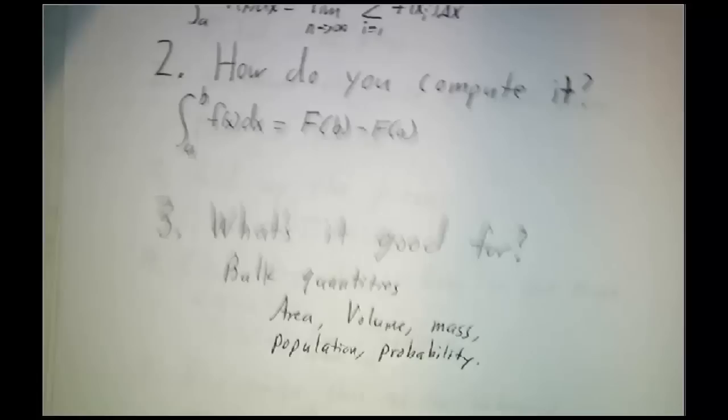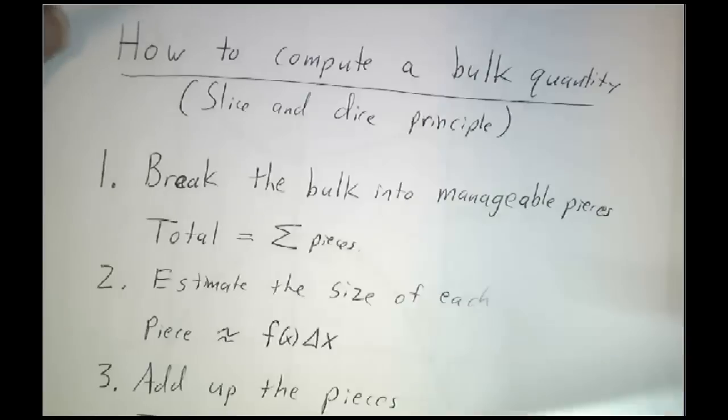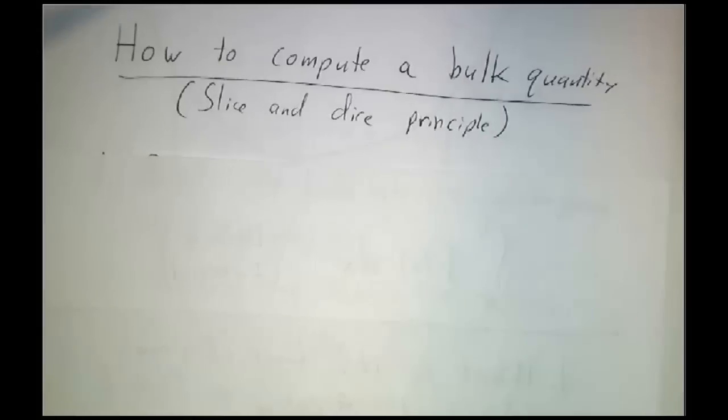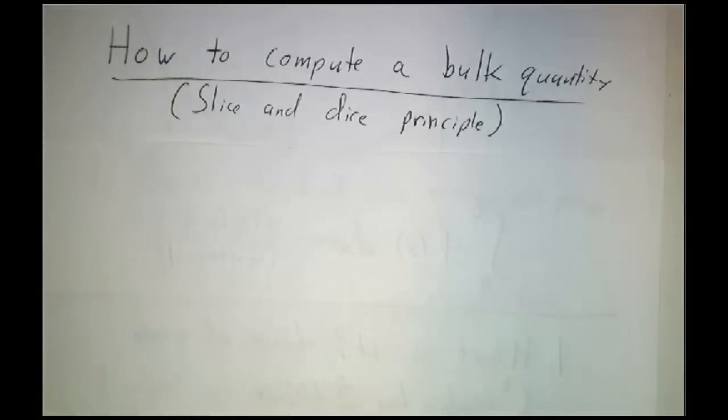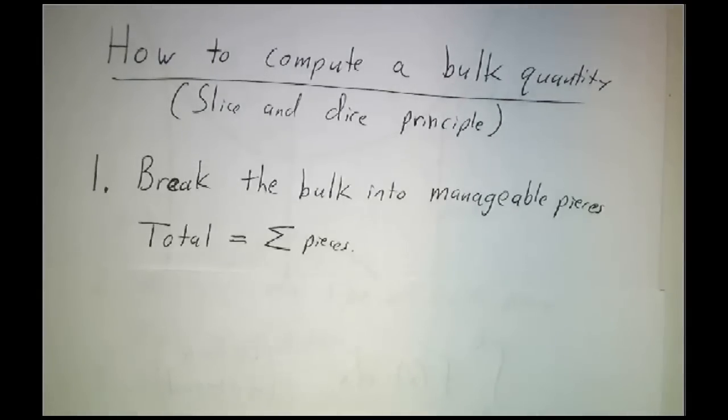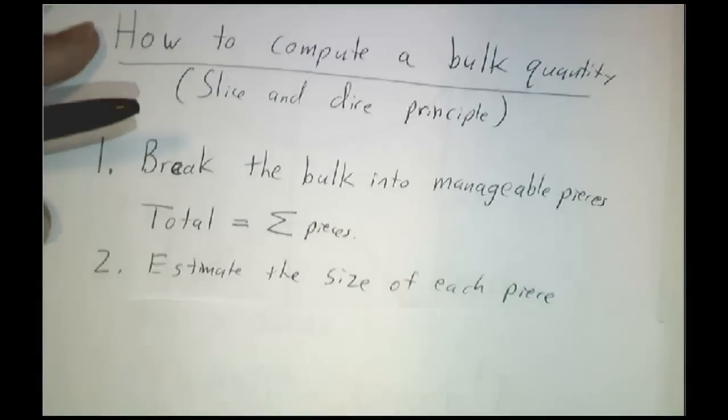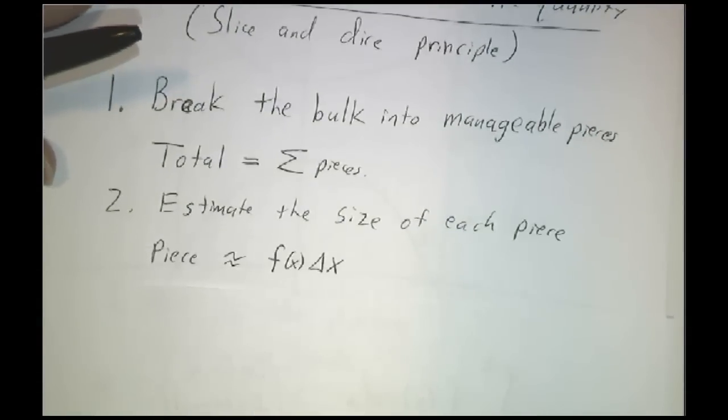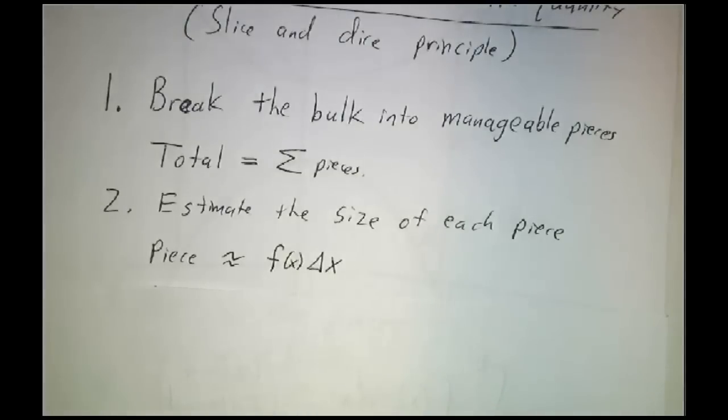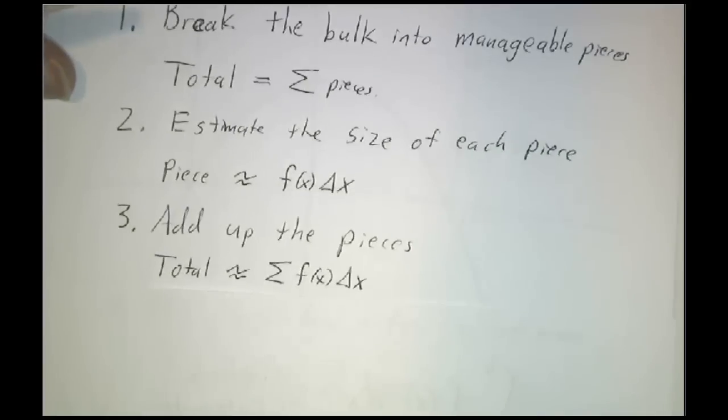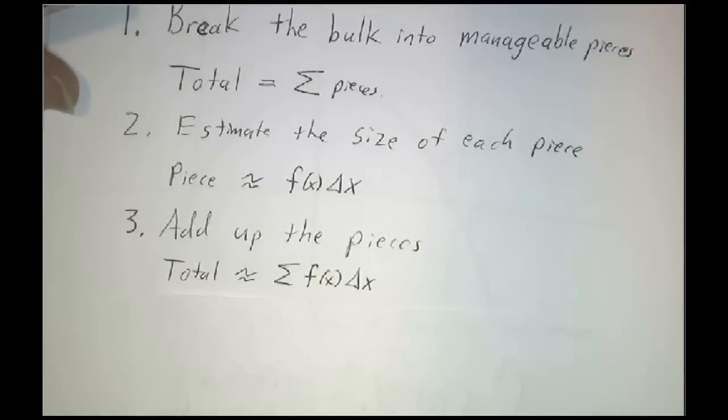So what's a strategy for computing any bulk quantity? If you've got a bulk quantity that you want to figure out, the idea, which I call the slice and dice principle, is first you break the bulk quantity into manageable pieces, chunks that you're gonna understand. The big bulk quantity might be complicated, but each little piece you understand. And then you estimate the size of each piece. Can I find a function f such that the size of each piece is f times the width of each piece?